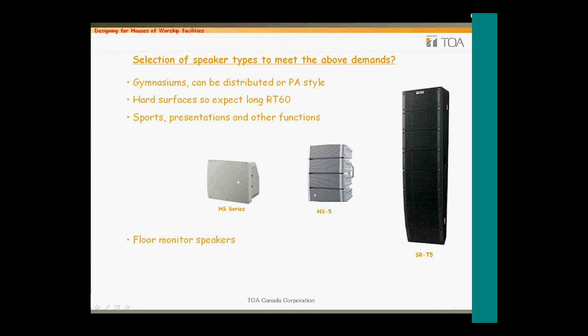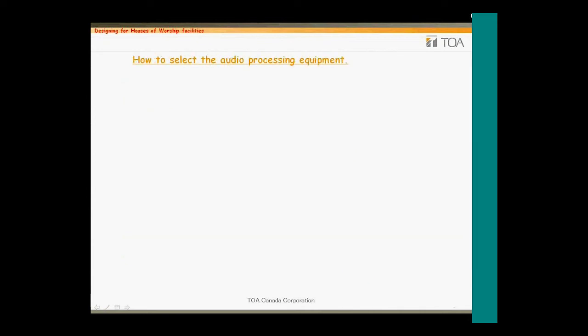With its tweeter array, the HS series offers very good vertical control over the upper frequencies, and since it has a 12 or 15 inch woofer, it is capable of producing a wide frequency range. For permanent installation of an outdoor speaker that must also produce a more musical tone, the CS series is well suited to carry voice and music. Once we have the types of speakers selected and their required placements, a decision will be required to determine the complexity of the mixer, processing or DSP, and amplifier power.